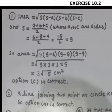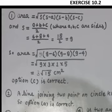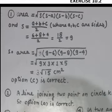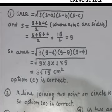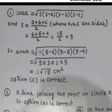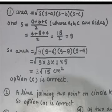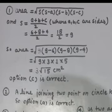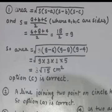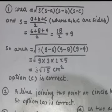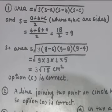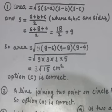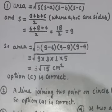Now Exercise 10.2, question number 1: find the area of a scalene triangle with sides 6, 8, and 4 cm. Using Heron's formula: S = (6 + 8 + 4) / 2 = 18 / 2 = 9. Area = √(9 × (9−6) × (9−8) × (9−4)) = √(9 × 3 × 1 × 5) = √135 = 3√15 cm². Option C is correct.